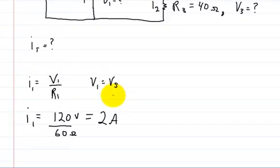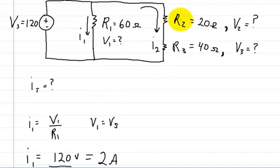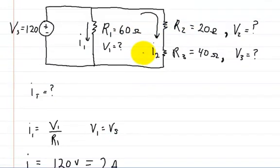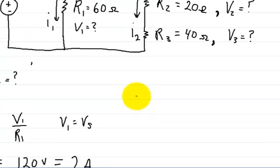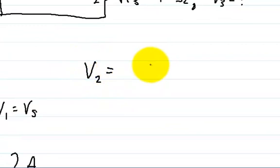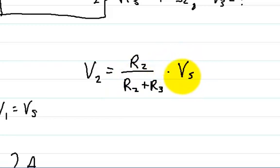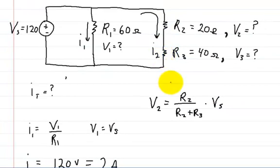So now let's go to the second branch. Let's find out what the voltage is here. And this is a 20 ohm resistor. So we're going to use the voltage divider rule for this one. And so we're going to say the voltage on V2 is going to be equal to R2 divided by R2 plus R3. We're going to multiply that by Vs, which is the total voltage across this branch.